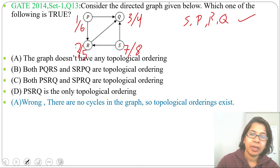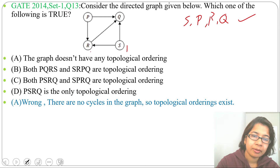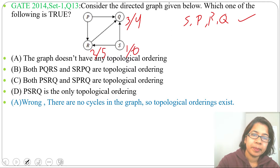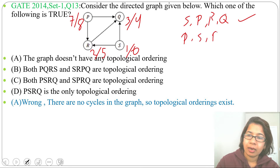Now let's start DFS from S: discovery time 1. After S we visit R, discovery time 2. After R we visit Q, discovery time 3 — dead end, backtrack, finishing time of Q is 4, finishing time of R is 5, finishing time of S is 6. Then we visit P, discovery time 7, finishing time 8. So we get the ordering: P, S, R, Q.